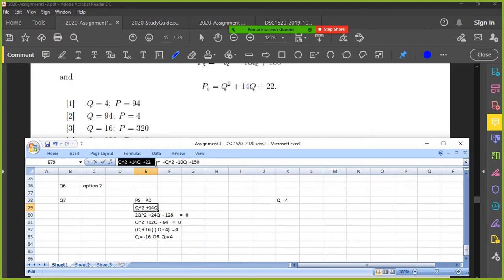Copy that. Okay, PS equals that. Okay, price equals bracket 4 squared plus 14 times 4 plus 22.